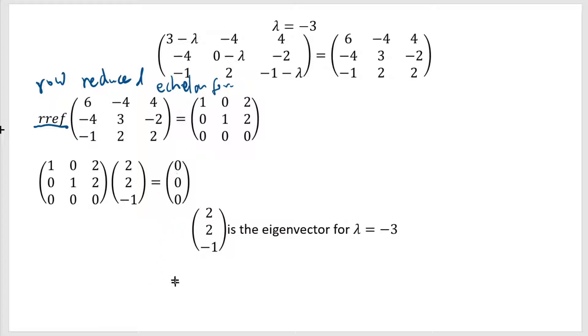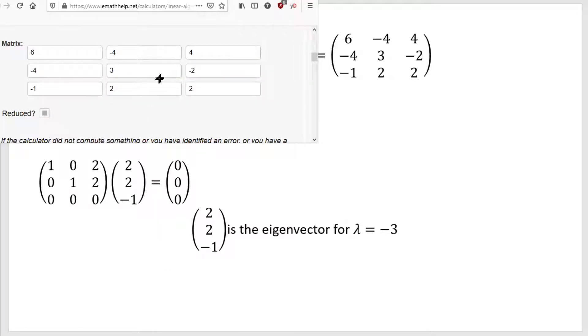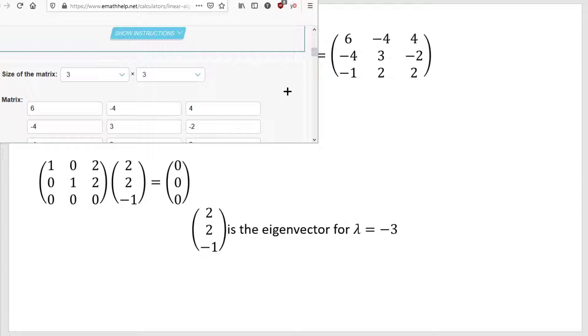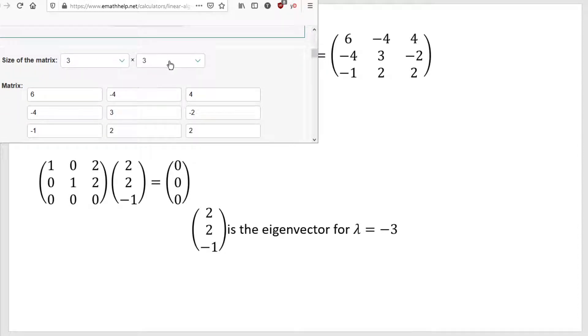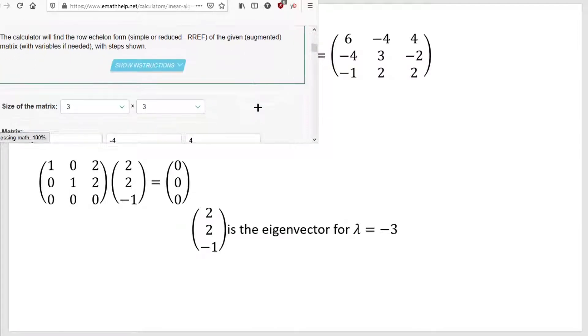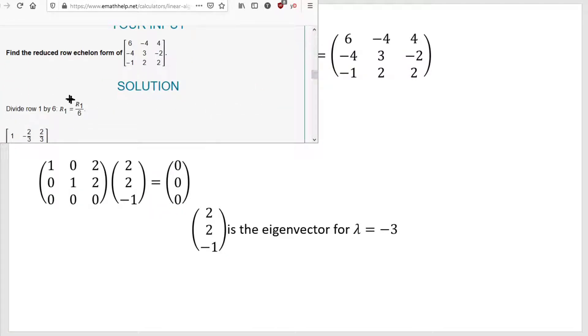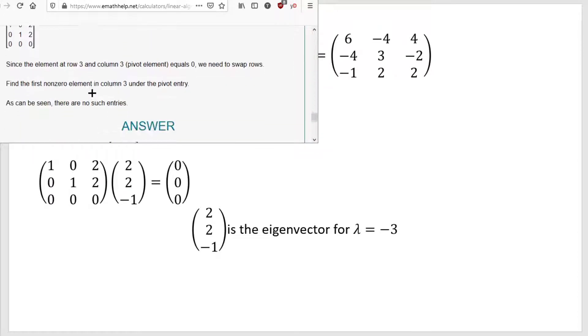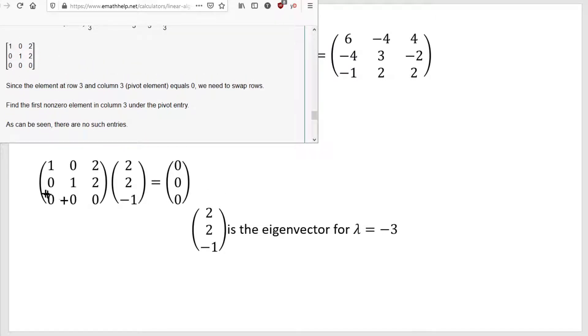You could do this by hand, it's not that bad. But since the goal is just to demonstrate how this entire thing is done, I'm going to use this website, emathhelp.net. I just googled RREF calculator and it got me to this. And you just choose the size of the matrix. And I just plugged in the value 6, negative 4, 4, and all that. And I click calculate. And not only does the calculation, it shows all the intermediate steps. And this is the final row-reduced echelon form.